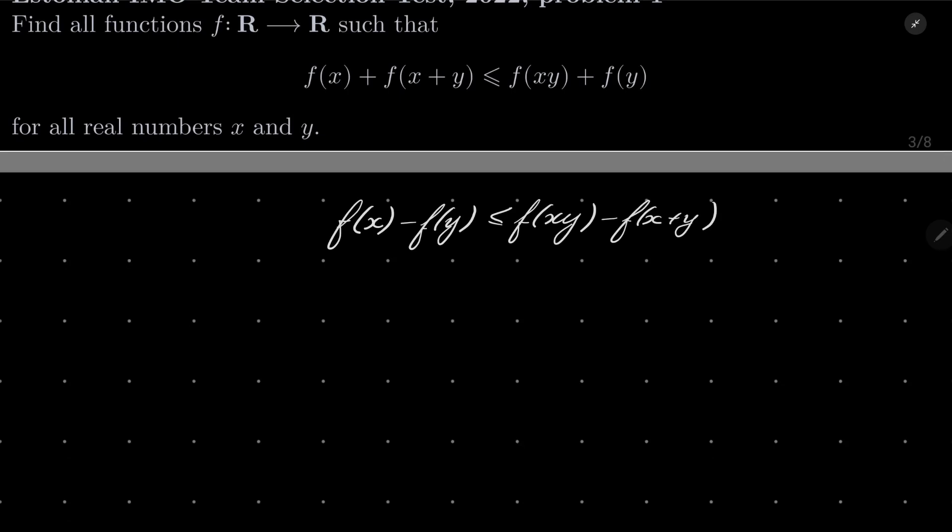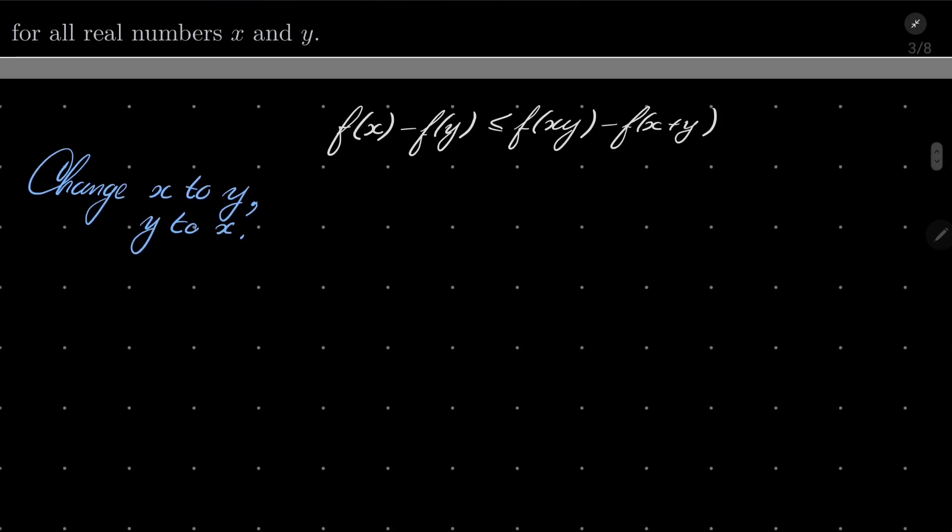So now what I will do is change x to y and y to x. Because of symmetry of the right hand side I have the following: f(y) - f(x), and the right hand side stays the same because it's symmetric with respect to x and y.